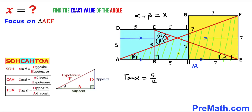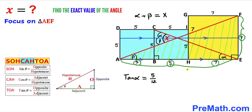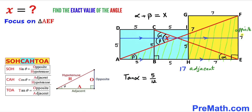Now let's focus on right triangle AEF. Its side lengths are 7 cm on one side, and 5 + 5 + 7 = 17 cm on the other. Using SOH-CAH-TOA, tangent of angle beta equals opposite over adjacent, which is 7 divided by 17.